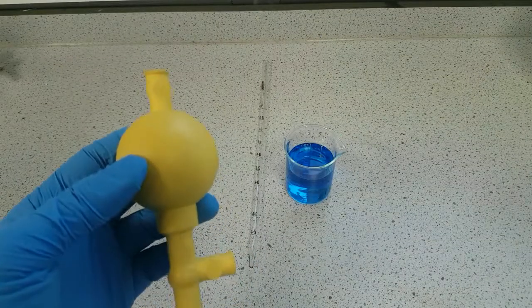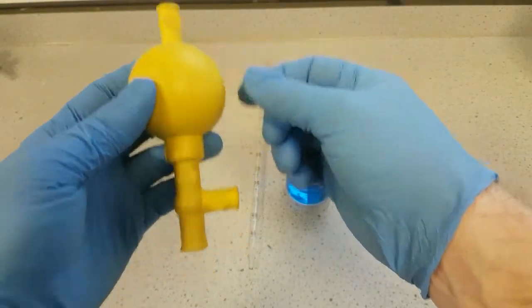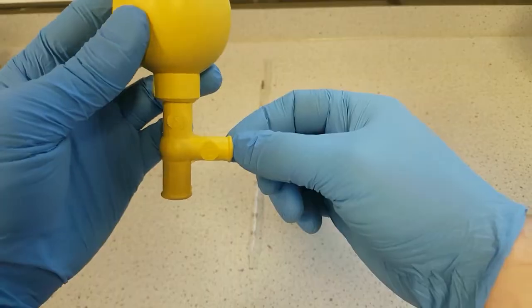In this video I'm going to quickly show you how to use a bulb pipette filler. This bulb pipette filler has three pressure valves: A, S and E.